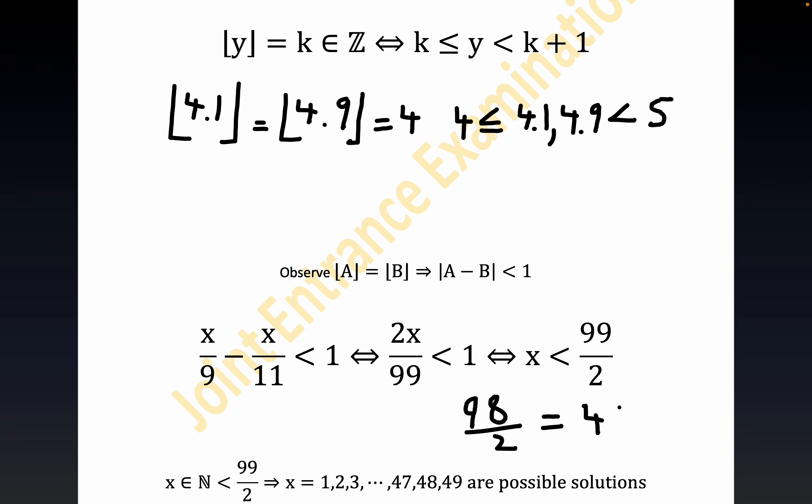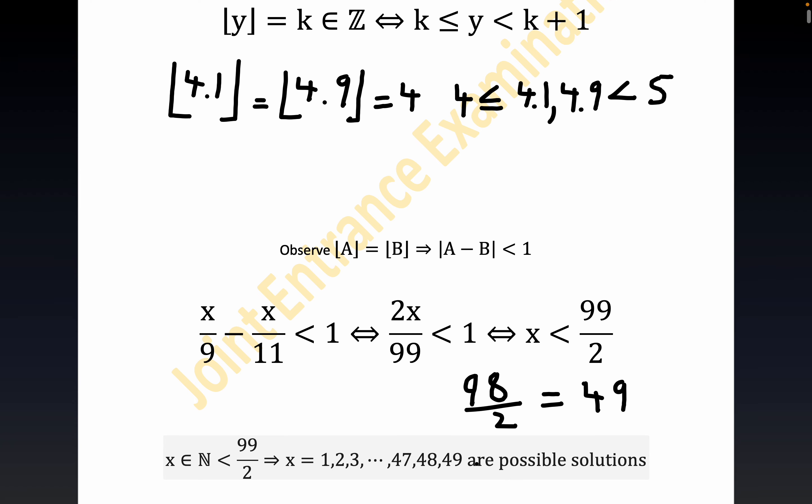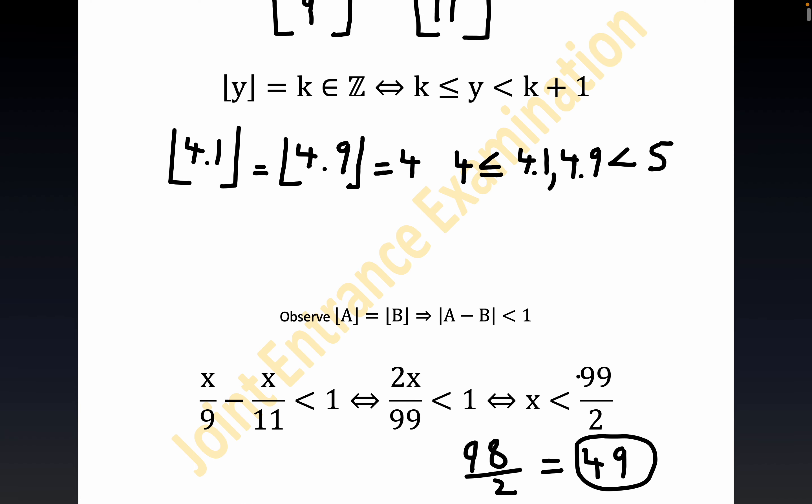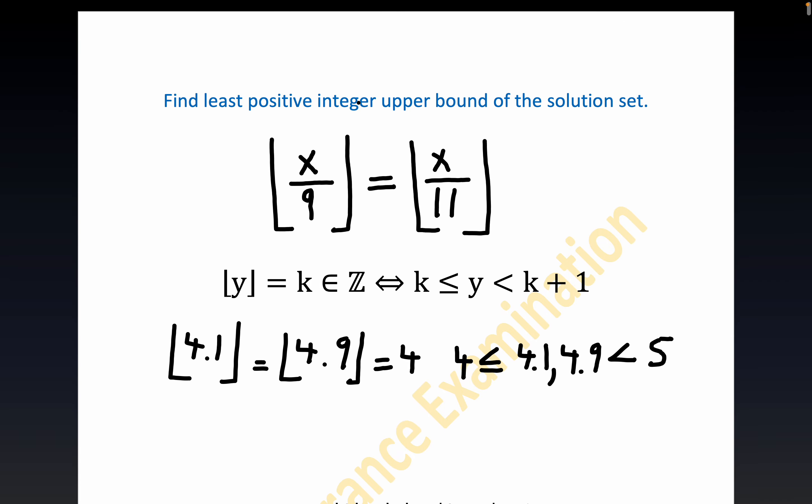Now I went ahead and listed all the possible solutions—these are all the positive integers or natural numbers, 1 all the way up to 49. But 49 would be the answer to the question right here. An upper bound for any type of problem is a nice thing to have because it limits your search for solutions. If you have a positive integer upper bound, you know when you can stop. You can try all the numbers exhaustively up to 49 and know you're done after you've reached 49.